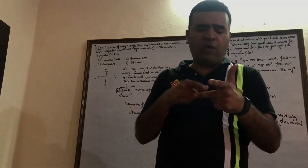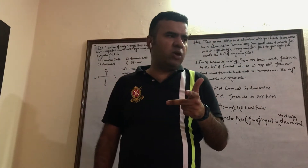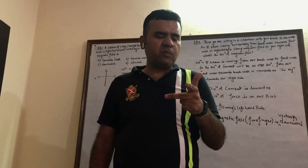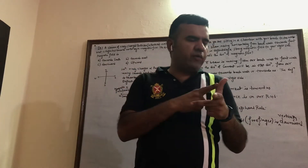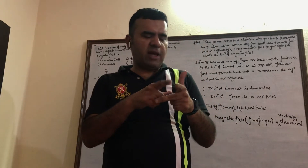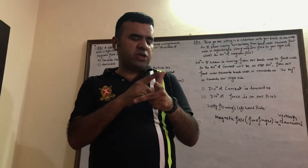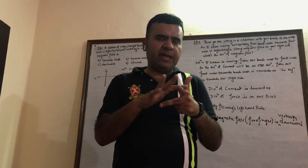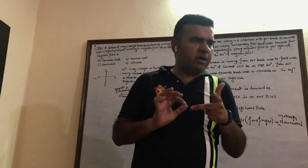Using Fleming's left-hand rule: if all three — the thumb, forefinger, and center finger — are perpendicular to one another, then the forefinger gives the direction of the magnetic field lines, the center finger gives the direction of current, and the thumb gives the direction of the magnetic force or motion.